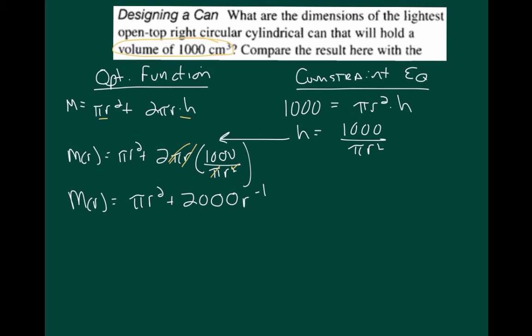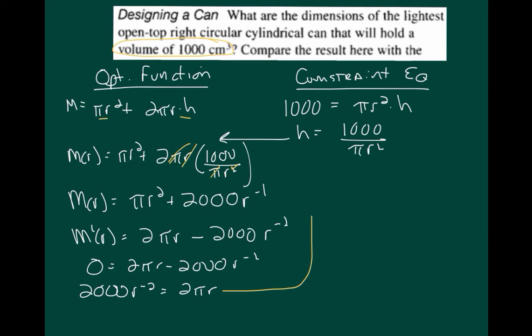Okay. Now, we're ready to take the derivative, which of course will be m prime of r, equals 2 pi r minus 2,000 r to the negative 2. Now, in order to find where that equals 0, I set the derivative equal to 0 and simply solve for r. Now, that gives me 2,000 r to the negative 2 equals 2 pi r. And I just don't like working with negative exponents.